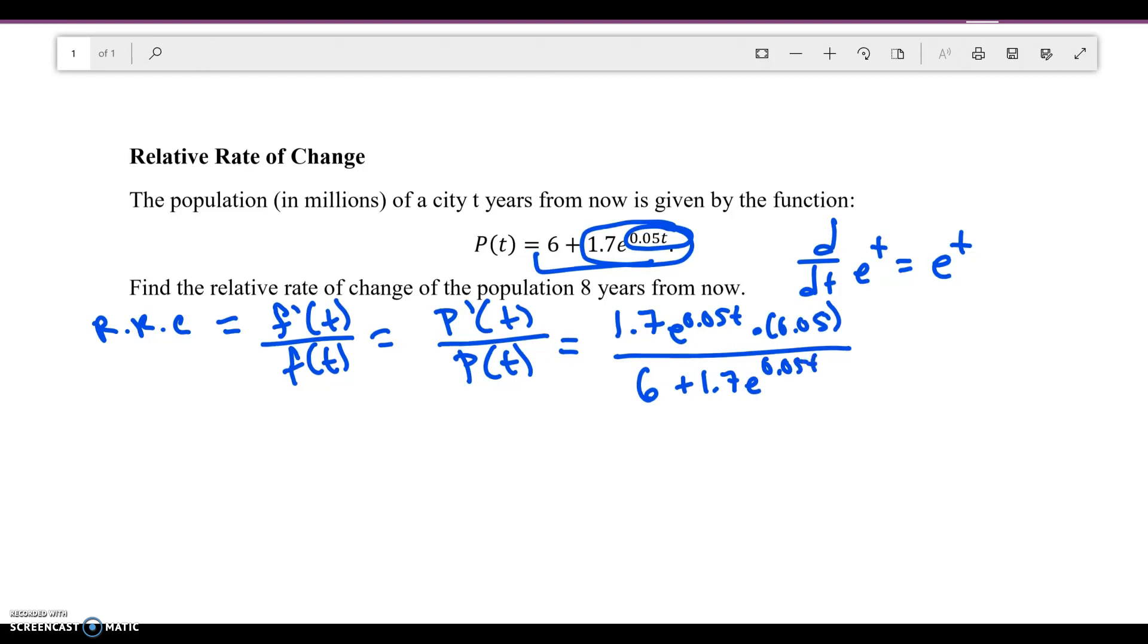You need to be able to take the derivative of the portion on top first. Let me clean this up a little bit. Let me multiply 1.7 times 0.05. What I'm going to get is 0.085 e to the 0.05 t, all over 6 plus 1.7 e to the 0.05 t.